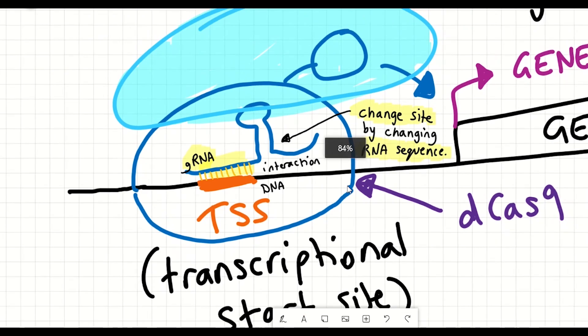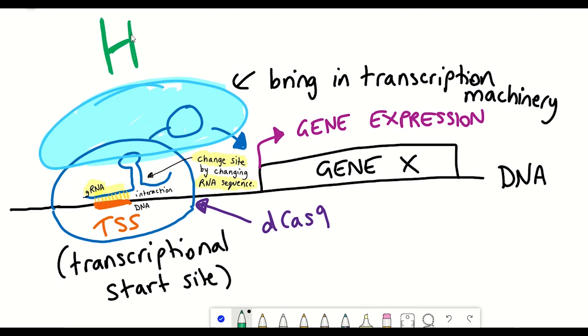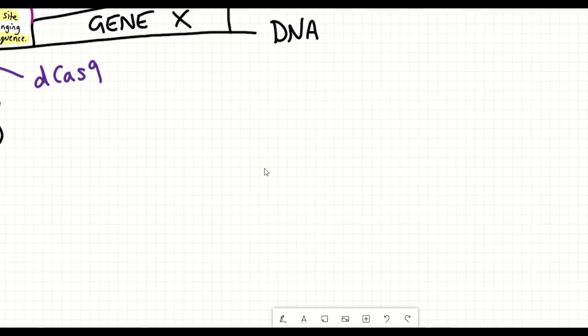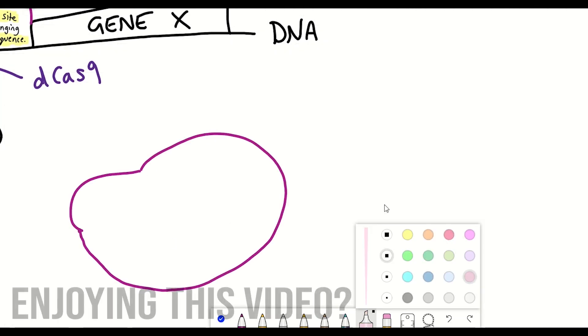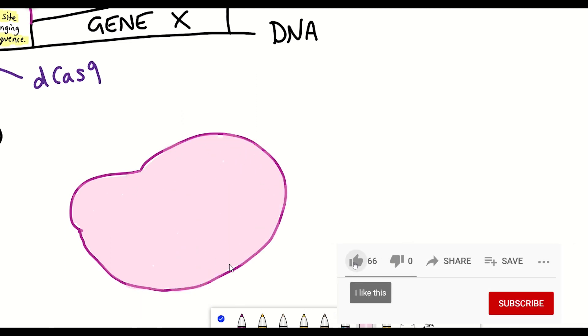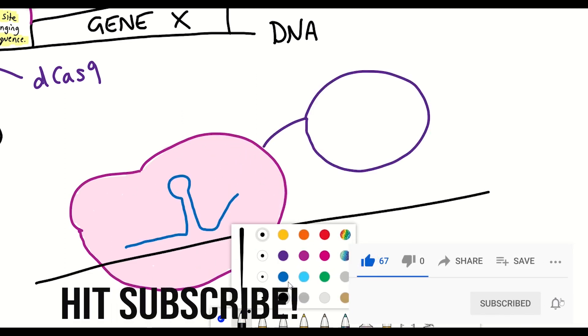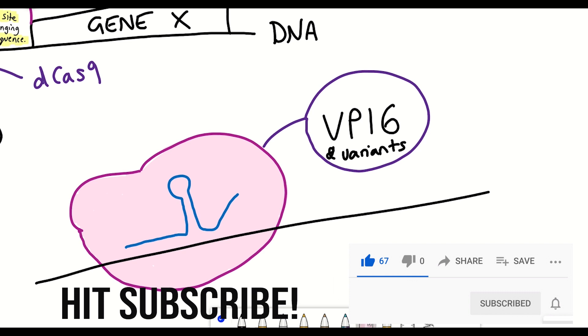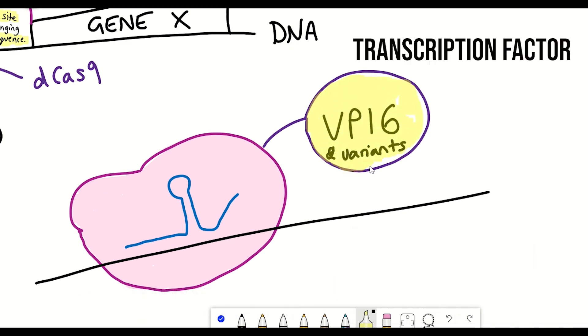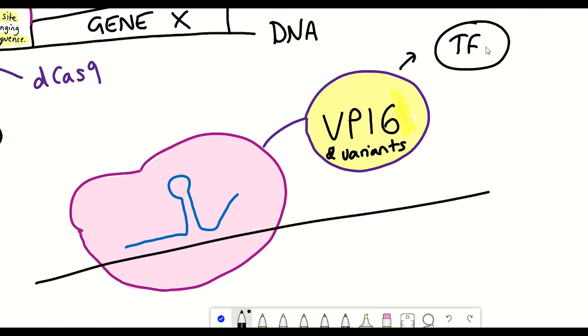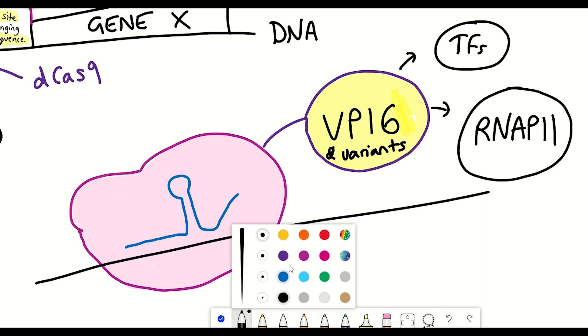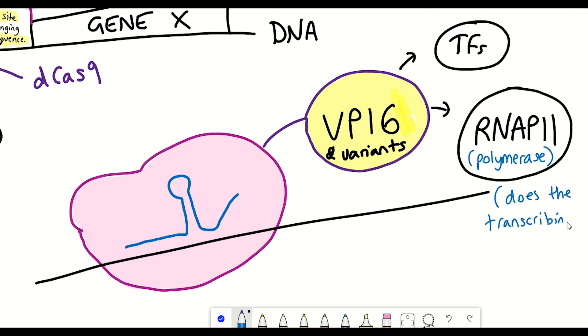And so now that we've recruited Cas9, how is gene activation actually achieved? Well, as with the epigenome editing, there have been a variety of different methods developed, but a lot of them seem to depend on fusing Cas9 to a protein known as VP16. And so this protein is a transcription factor taken from the herpes simplex virus. And this transcription factor can directly interact with some mammalian transcription factors and also the RNA polymerase 2, which is the polymerase that carries out transcription and hence gene activation.